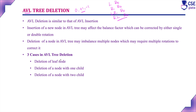We have already discussed insertions. There are three cases in AVL tree deletion. We have already discussed two cases — deletion with a leaf node and deletion with one child. Now we are going to discuss deletion of a node with two children.